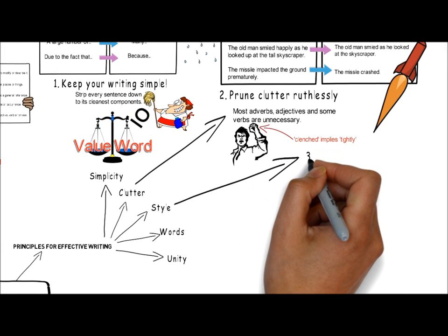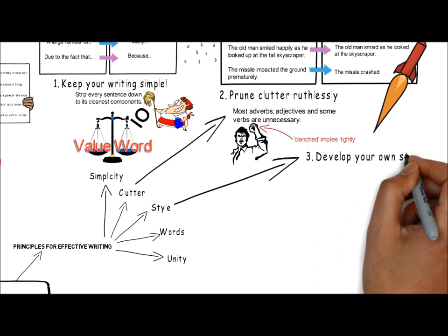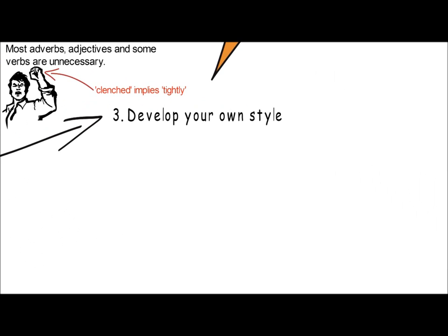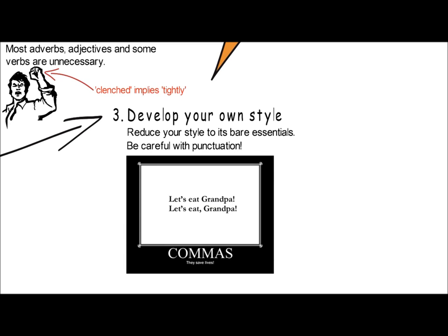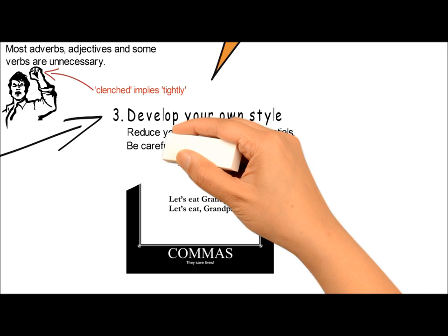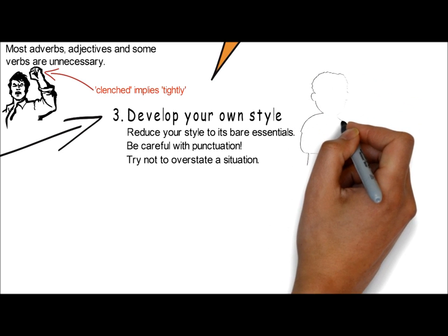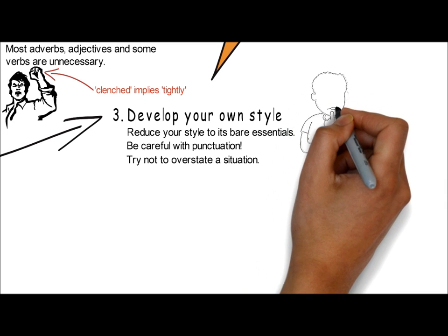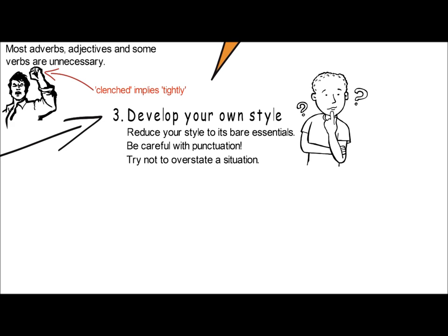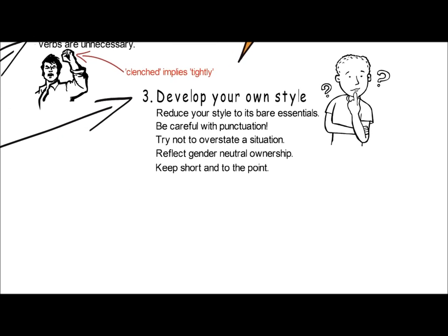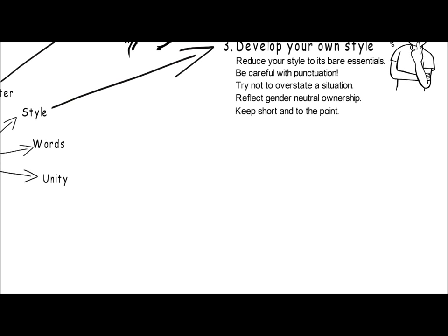It is also important to develop your own style, as your writing will be most effective when you are relaxed and writing in a manner that you are comfortable with. Start by reducing your style to its bare essentials — you can always add words back in later. Be careful with your use of punctuation, as a misplaced punctuation mark can change the whole meaning of your sentence, as the graphic illustrates. Take care not to overstate a situation, particularly for writing that will inform a decision maker. Overstating a situation may prompt them to act prematurely or avoid acting at all, both of which could adversely affect what they are seeking to achieve and will undermine your credibility. We also need to constantly be on the lookout to eliminate connotations of male ownership and should seek to reflect gender neutral ownership where possible. One of the biggest stylistic changes a person can implement is keeping sentences and paragraphs short and to the point, with paragraphs used to capture a single train of thought.